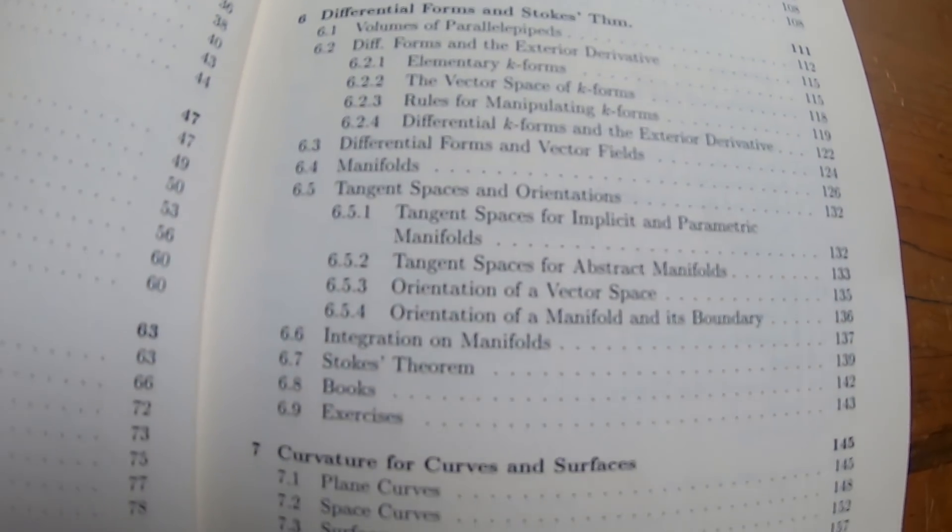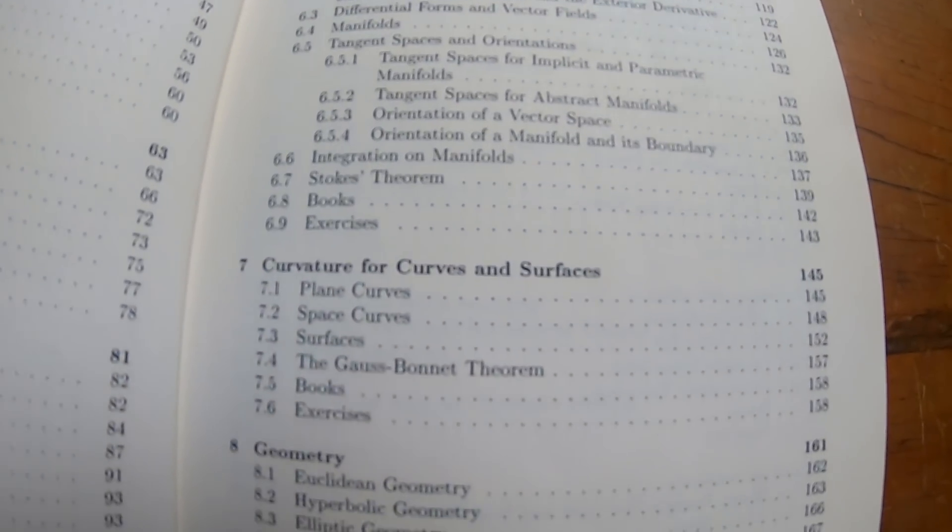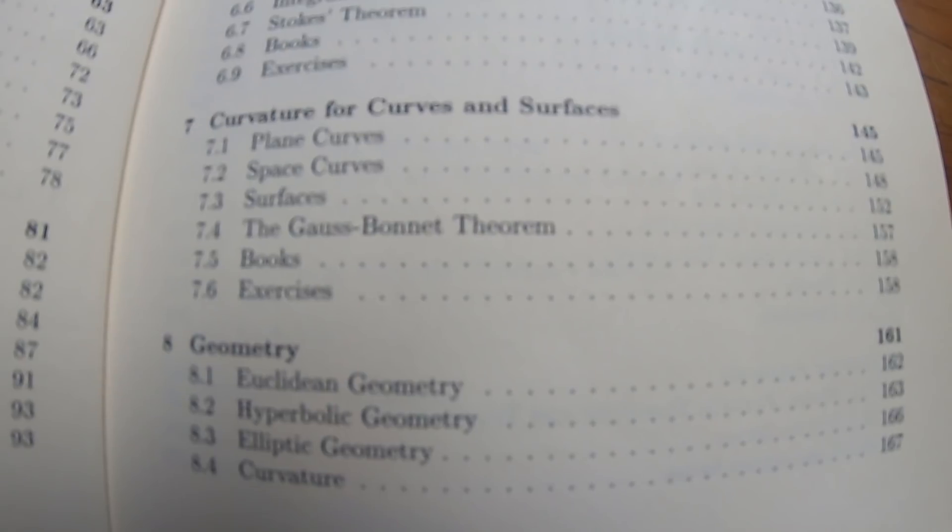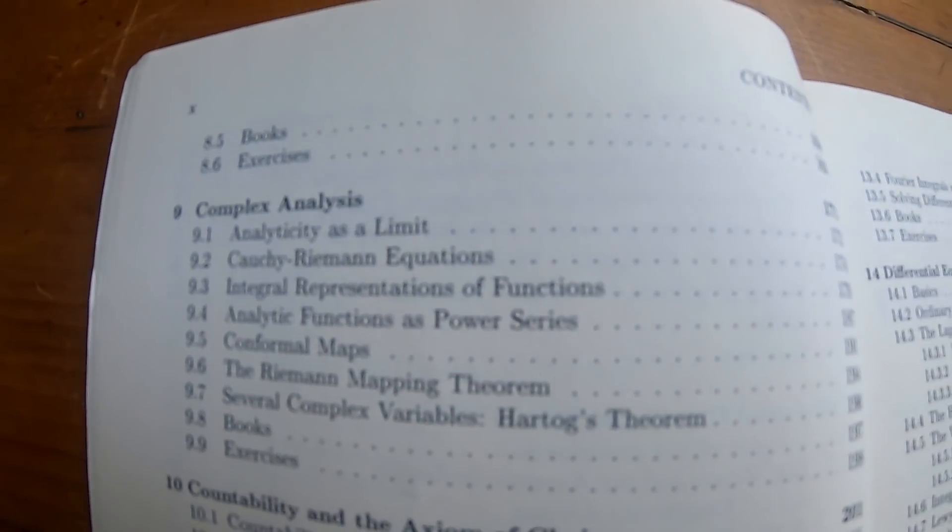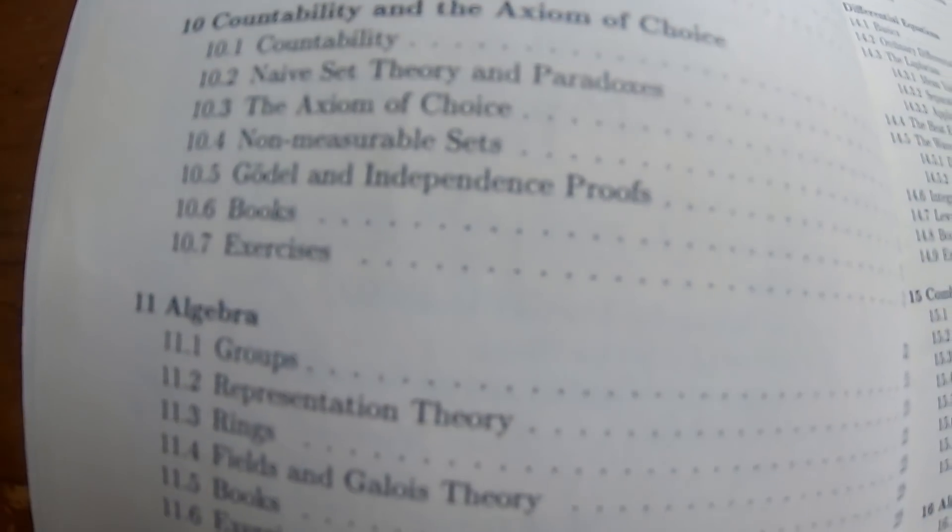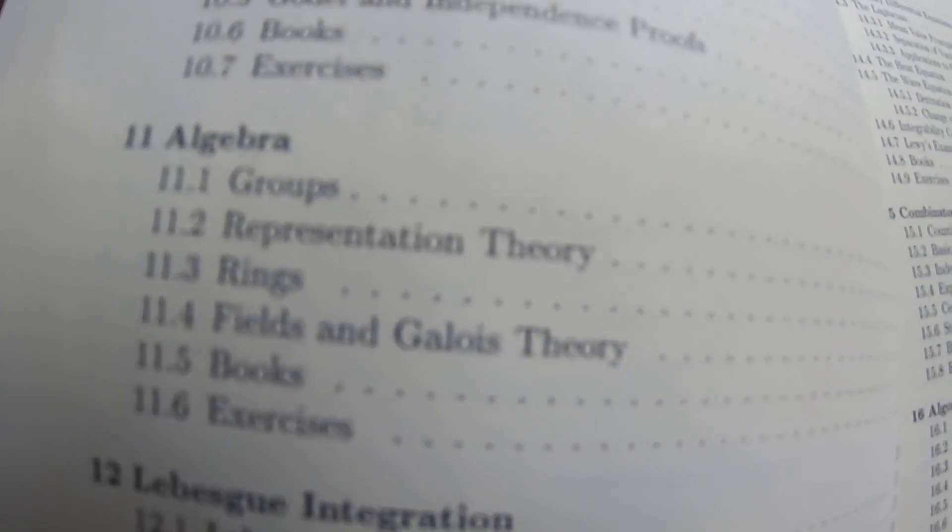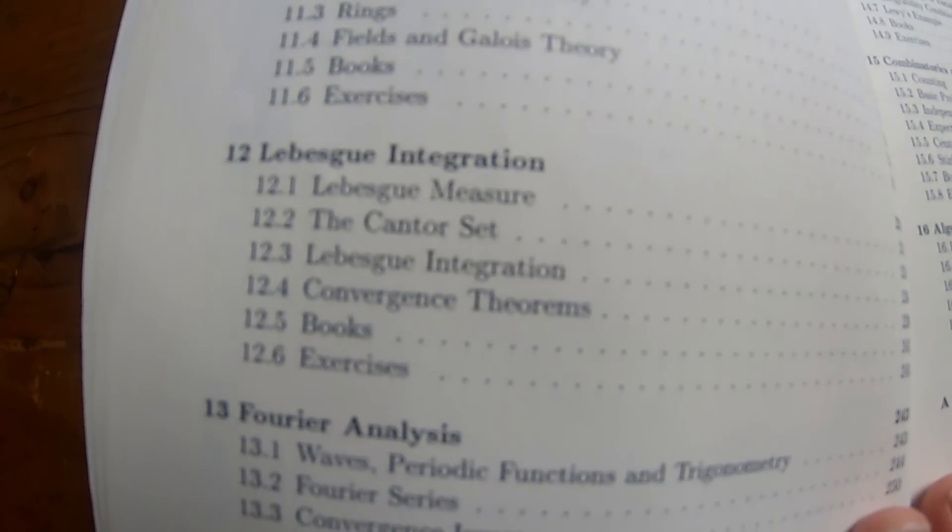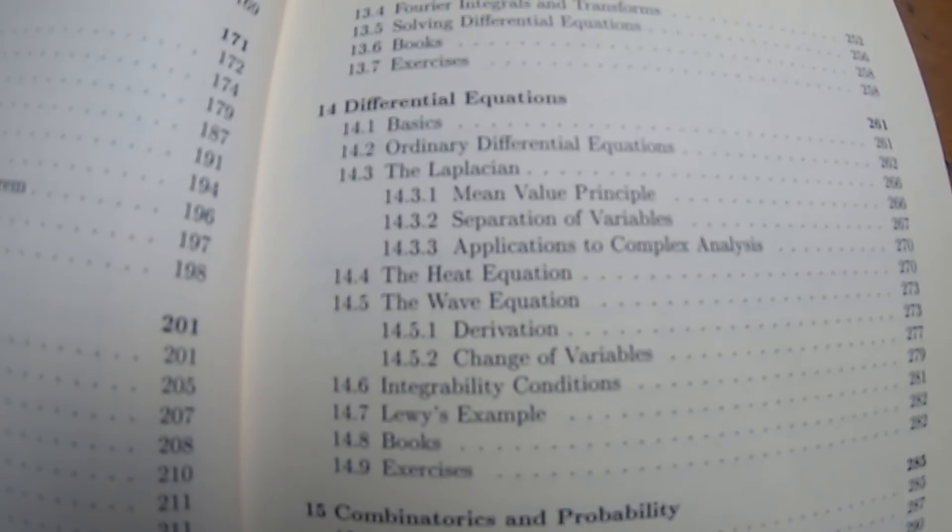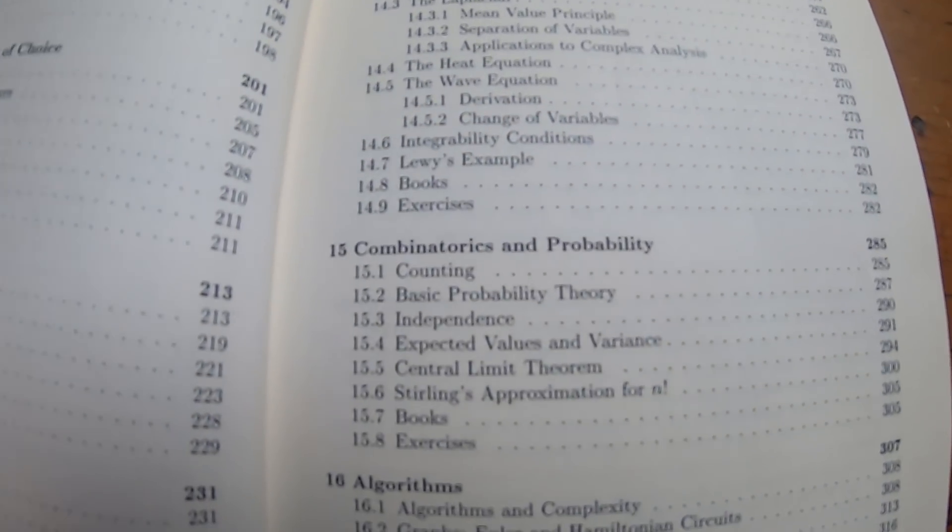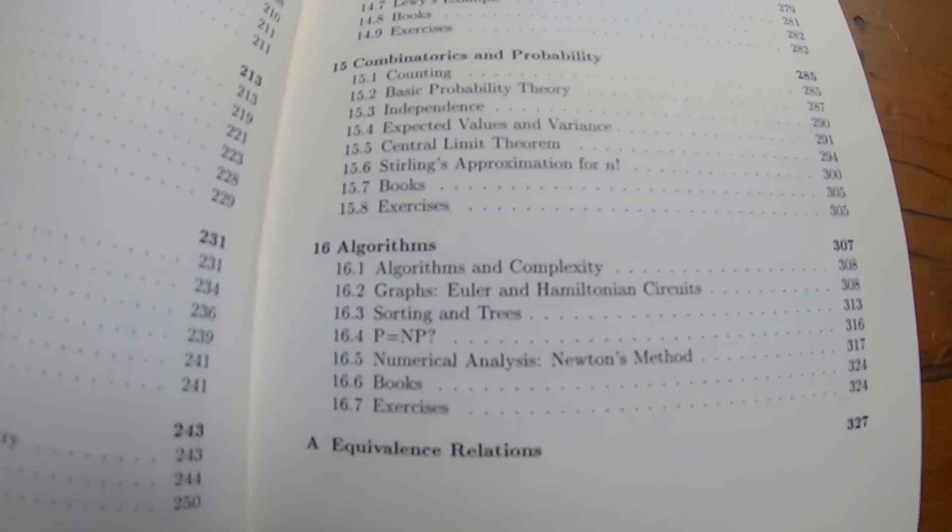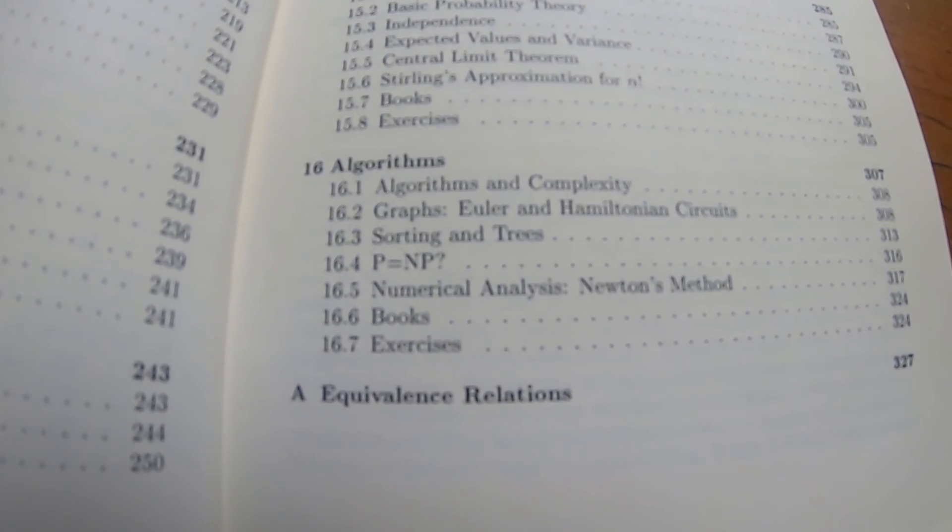There is a lot of math in this book. For example, geometry. I never took a course on geometry ever in my life. It just keeps going. Complex analysis. It talks about countability. It talks about algebra. So he means abstract algebra by that. Lebesgue integration. Fourier analysis. I mean, just so much content. Of course, differential equations. Some combinatorics and probability. And then he finishes with algorithms. And then he talks about equivalence relations, I guess, in an appendix.